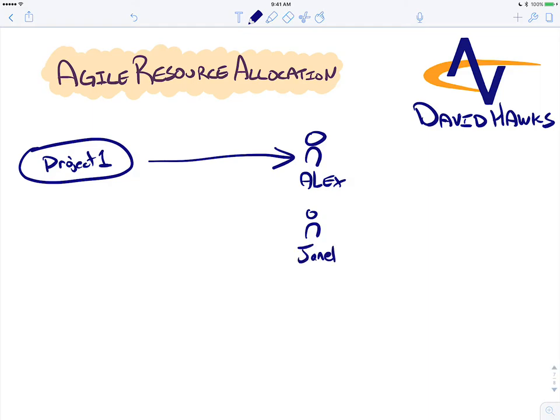I also have Janet here. I need to assign some work to Janet, and I also have Cameron. So let's say we assign out all of Project 1. We say, all right, Alex, you're on that, Cameron, we need to get this done.